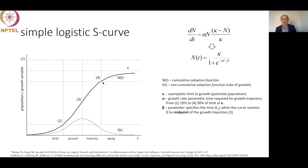The parameter alpha is the growth rate parameter, representing the time required for the growth trajectory within the period from point 2 to point 4 — essentially the time of exponential growth. Parameter beta is the midpoint of growth — the specific time when the population reaches half the upper limit of growth. It is interesting to know this point because it indicates the time of highest rate of change.